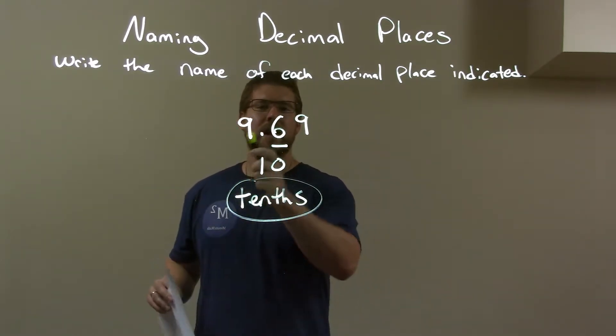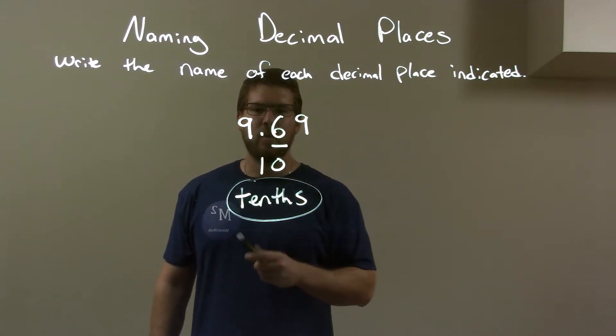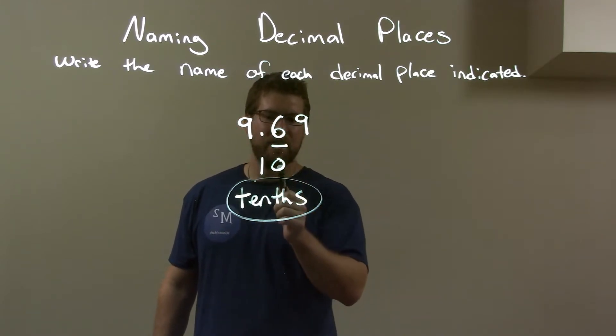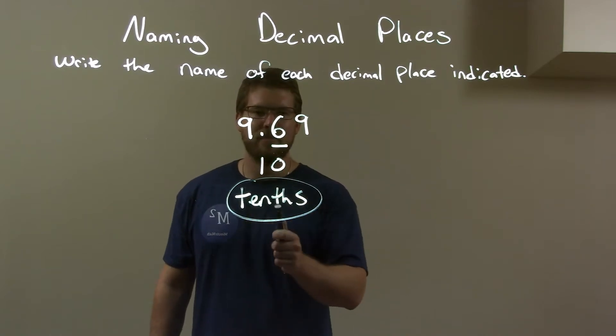So a quick recap: we have 9.69 and we need to know what place this 6 is in. Well, using my technique, 1 underneath the decimal and 0 underneath the 6—that number is 10. So this place is the tenths place.